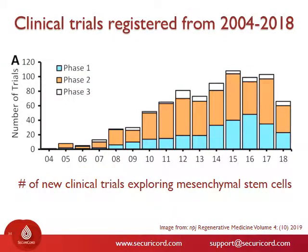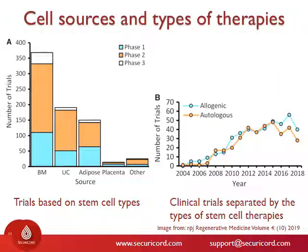There has been a tremendous amount of growth in the number of clinical trials registered between 2004 and 2018. If we focus on clinical trials involving mesenchymal stem cells — the kind found in cord tissue — between 2005 and 2015, the number of these trials increased by tenfold. When we categorize these trials by stem cell type and transplant type, umbilical cord stem cells, or newborn stem cells, are the second-largest category being explored for their potential as a future therapeutic. Scientists are likely only at the tip of the iceberg in developing new treatments for diseases using stem cells.